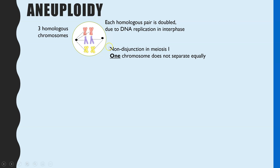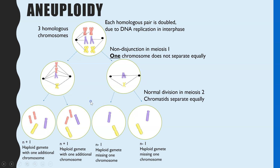Because this is aneuploidy, it's just one chromosome that does not separate equally — the red one. Both red homologous pairs are pulled to the left pole, while the purple and yellow do separate equally with one of each in the new cells. Meiosis II happens normally, so all chromatids separate equally. The resulting gametes are all haploid, but two are missing the red chromosome — described as N minus 1 — and two have one additional red chromosome, described as N plus 1.